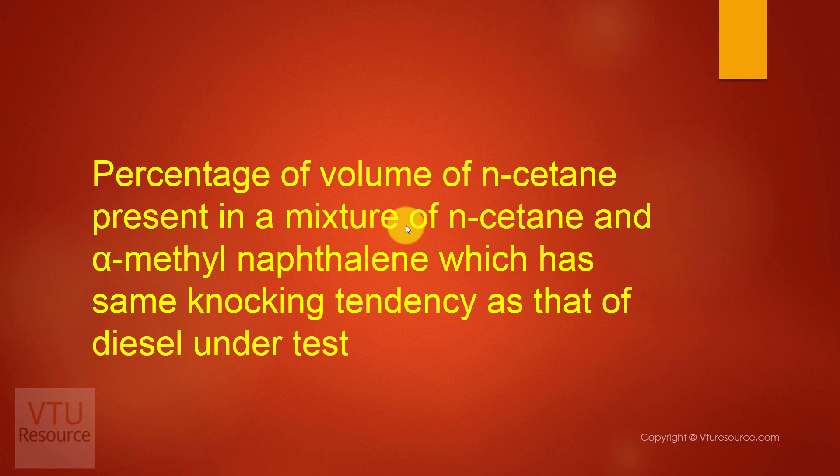Cetane is nothing but 16 carbon atoms. Since it is a straight chain hydrocarbon, using the formula Cn is 2n plus 2, C16 gives H34. So N-Cetane has the molecular formula C16H34.